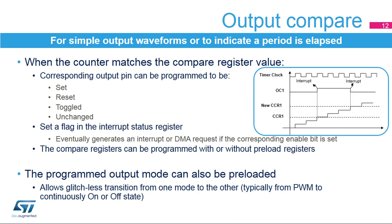This slide presents the output compare features. A compare event is generated when the counter matches the value of the compare register. This event can trigger an interrupt or a DMA request and can be reflected on the corresponding output pin by an output set, output reset, or output toggle. The compare register can be preloaded. The preload must be disabled if multiple compare values must be written during a counting period.